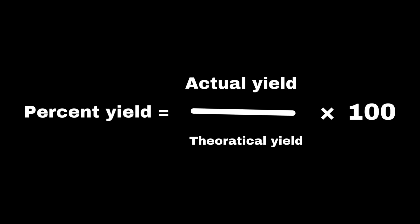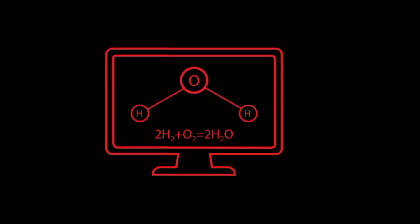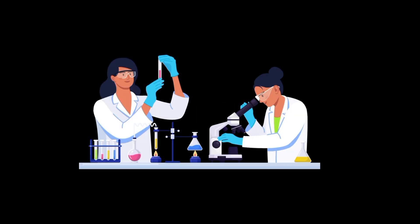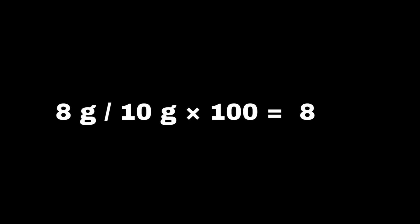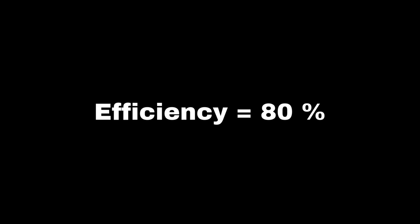Theoretical yield is the amount of product you should get if everything goes perfectly, calculated from the balanced equation. Actual yield is the amount of product you actually collected in the lab. For example, if you expected to produce 10 grams of a substance but only got 8 grams, your percent yield would be 8 g ÷ 10 g × 100 = 80%. This means the reaction was 80% efficient.